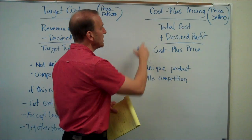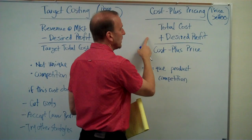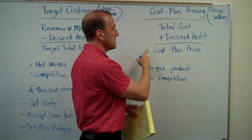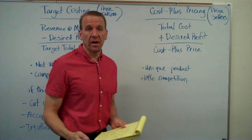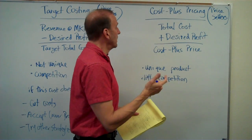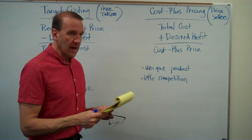When that's the case, we take our total cost for manufacturing it, then we figure out what kind of profit we want to make, and that sets our cost plus price. It's the cost plus our profit that gets us the price we'll sell it for.